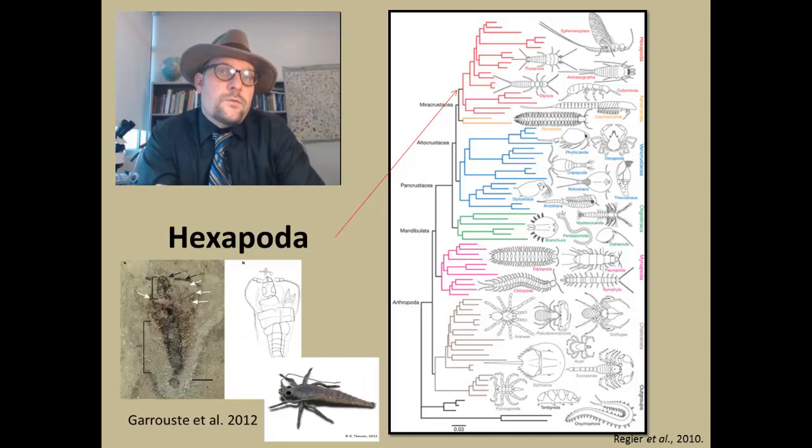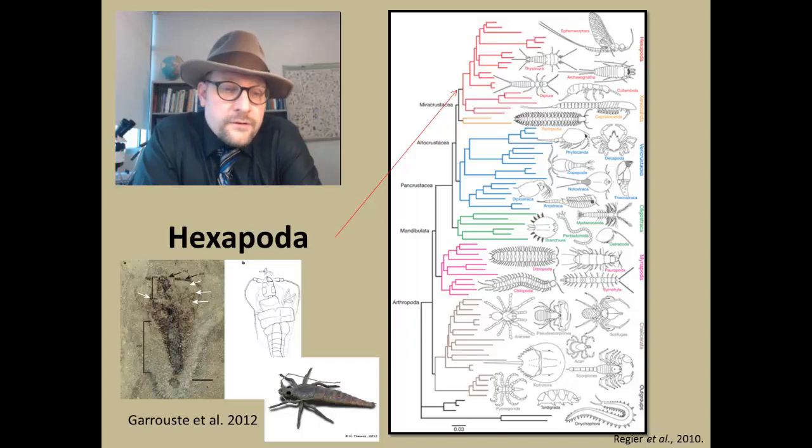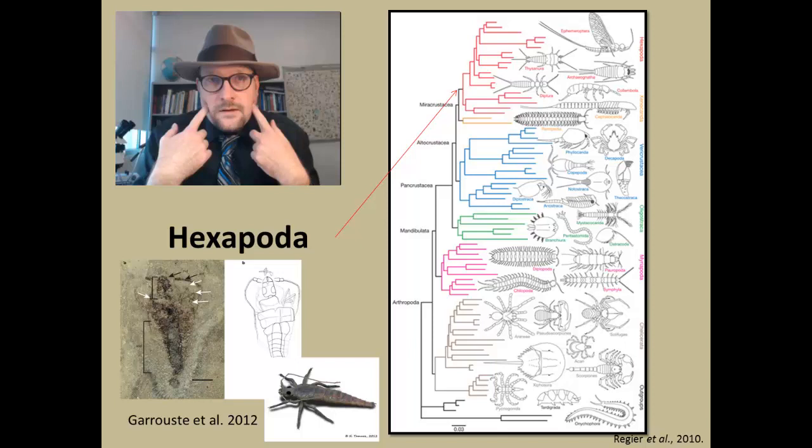The fossil record of the hexapods extends all the way back to the Devonian period with the fossil Rhyniognatha hirsti, which appears to have had three paired legs and a segmented body with a head, thorax, and a larger abdomen. These early Devonian insects are close in appearance to modern springtails, which belong to a group called the Entognatha, which means the mouth parts are retracted inside the head.